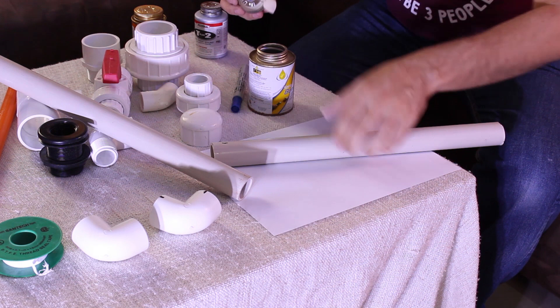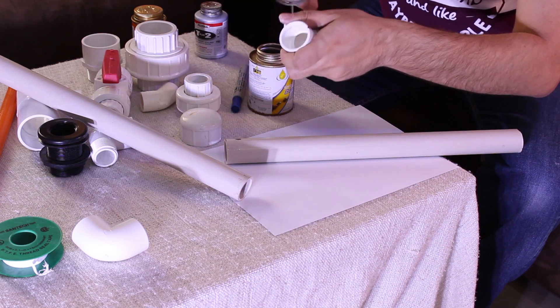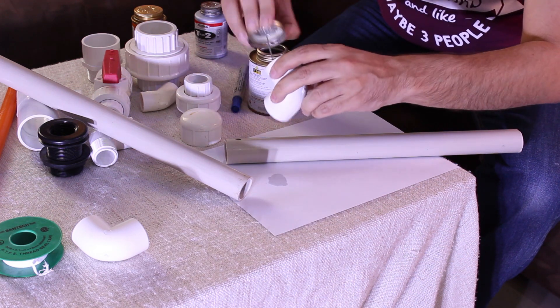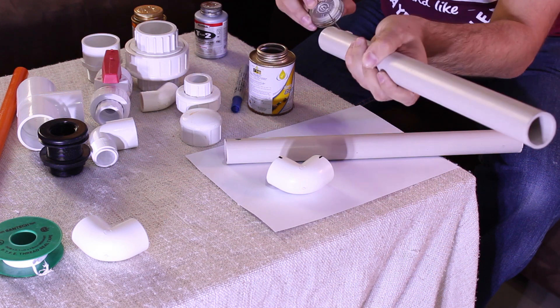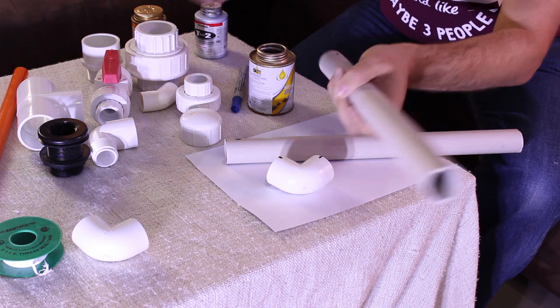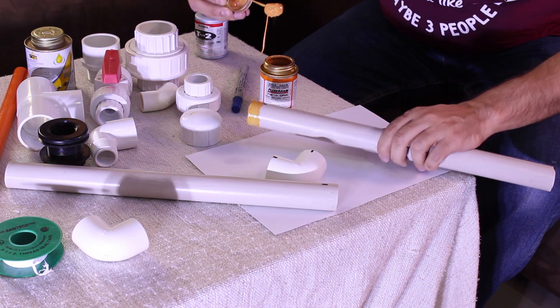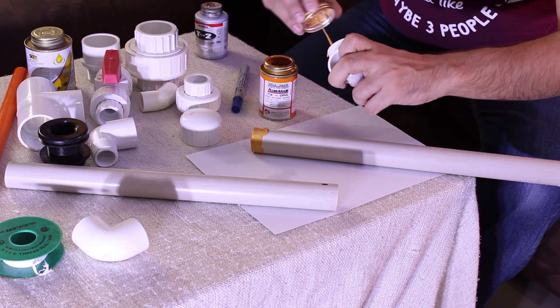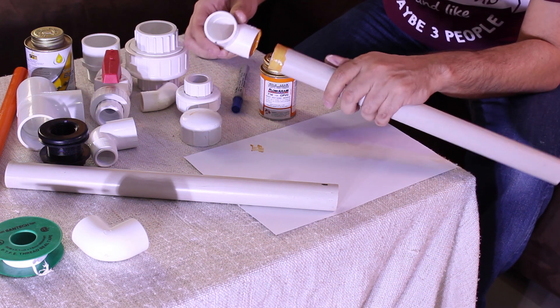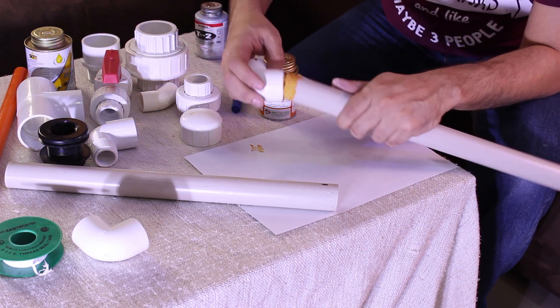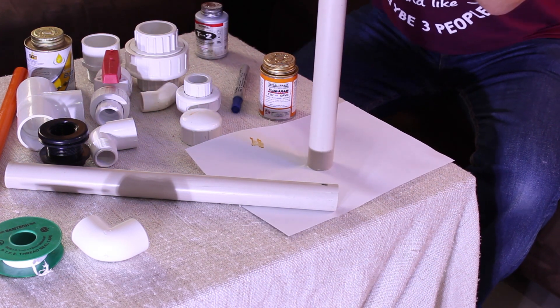Before gluing the pipes and the fittings, we use some PVC cleaner to clean the fittings and the pipes. Then we use a generous amount of PVC cement on both ends of the pipe and the fitting, and we push and twist for 10 seconds until we have a perfect seal.